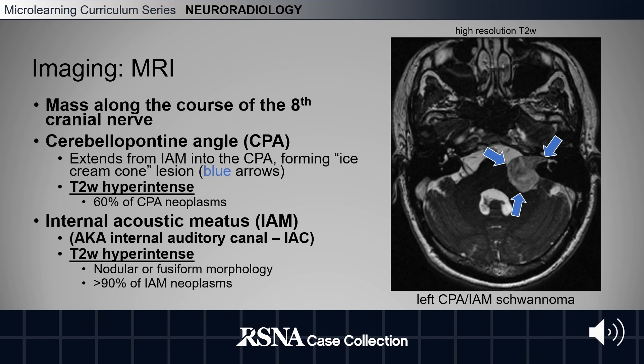Our image on the right with the blue arrows demonstrates a left vestibular schwannoma that extends from the internal acoustic meatus into the cerebellopontine angle, forming the traditional ice cream cone shaped lesion.